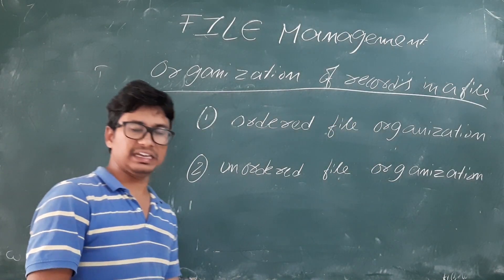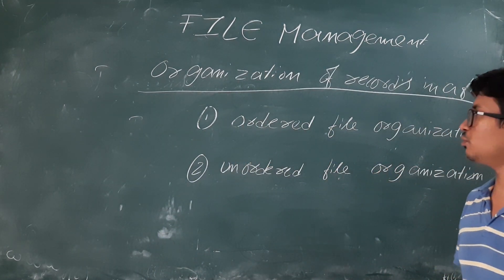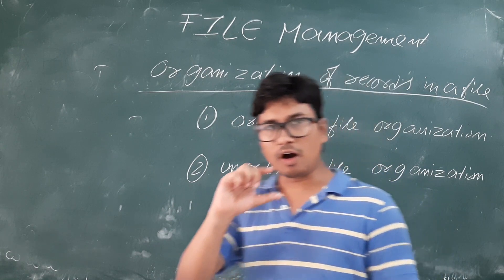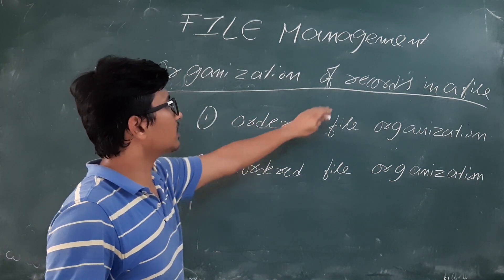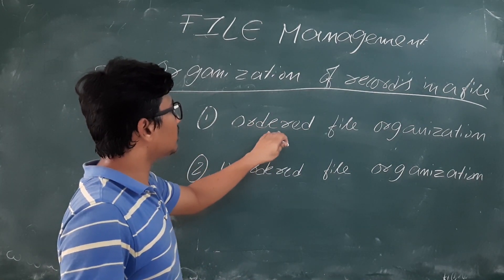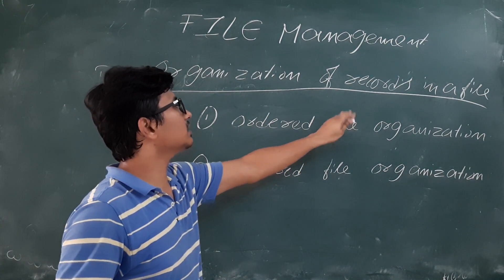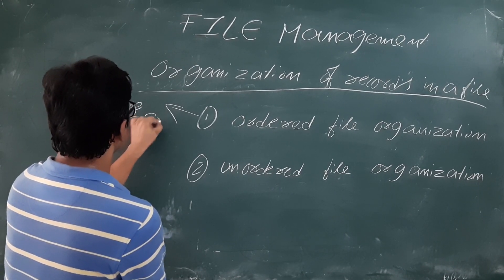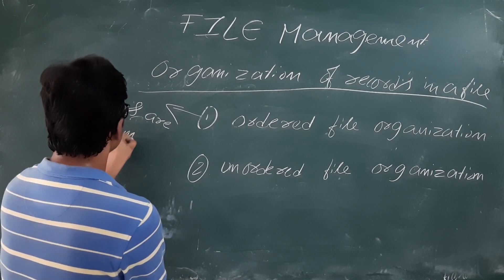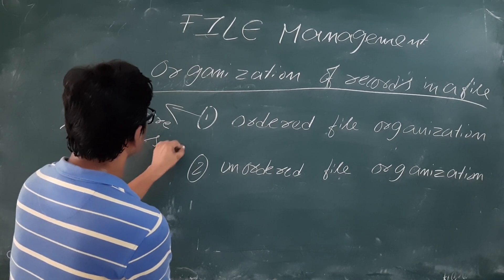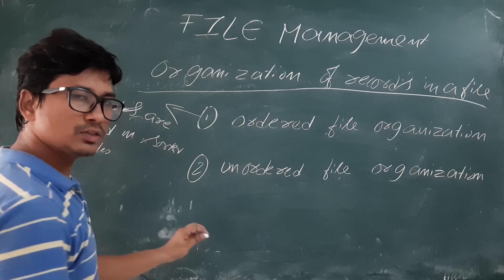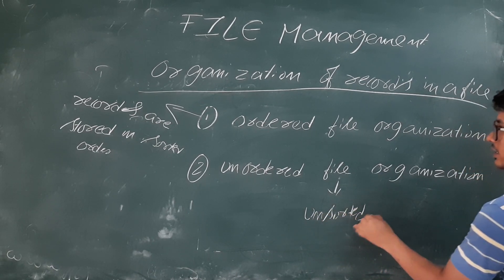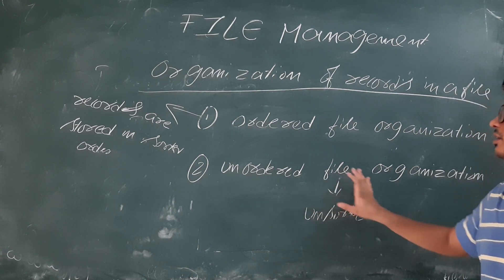Now we will discuss the organization of records in a file. We can organize records in two ways. One is the ordered file organization and the second is the unordered file organization. Ordered file organization means all the records are stored in sorted order. If all the records are ordered in sorted order, then we say it is ordered file organization. In unordered file organization, the records are stored in unsorted order.